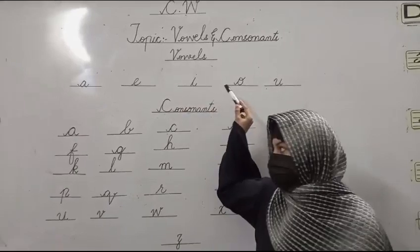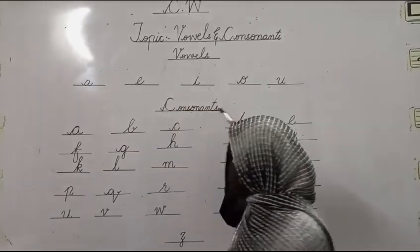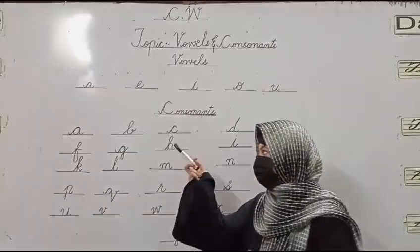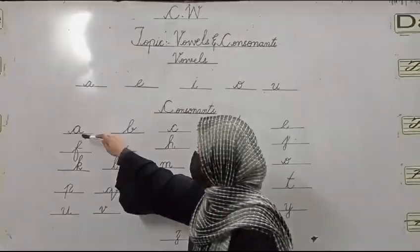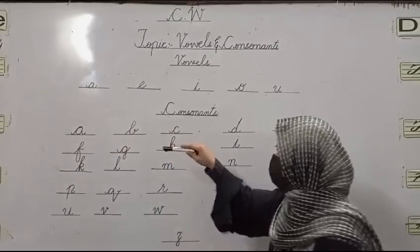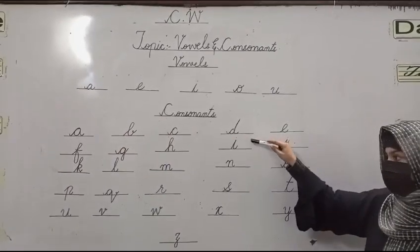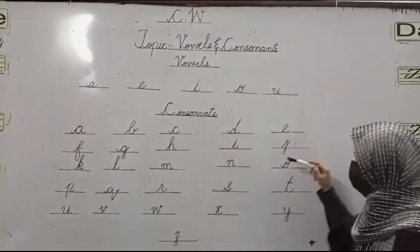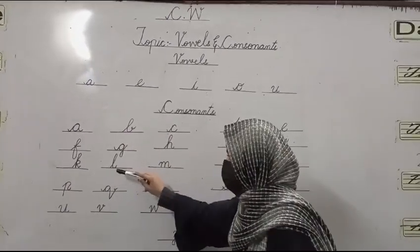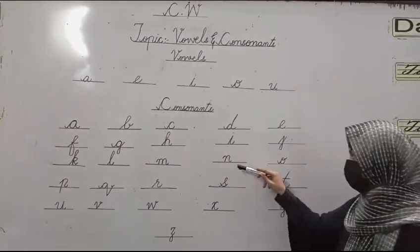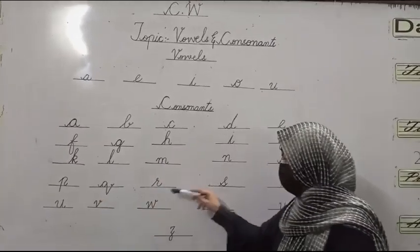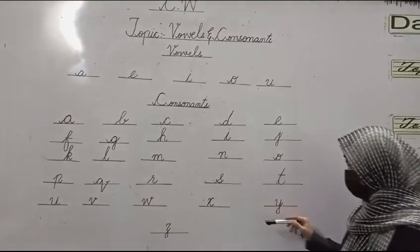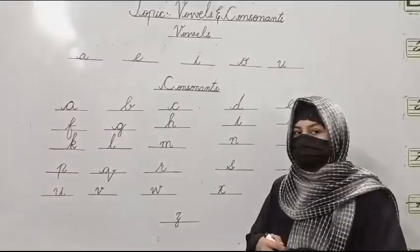They are called vowels. Consonants are the letters except vowels. So these are B, C, D, F, G, H, J, K, L, M, N, P, Q, R, S, T, V, W, X, Y, and Z.